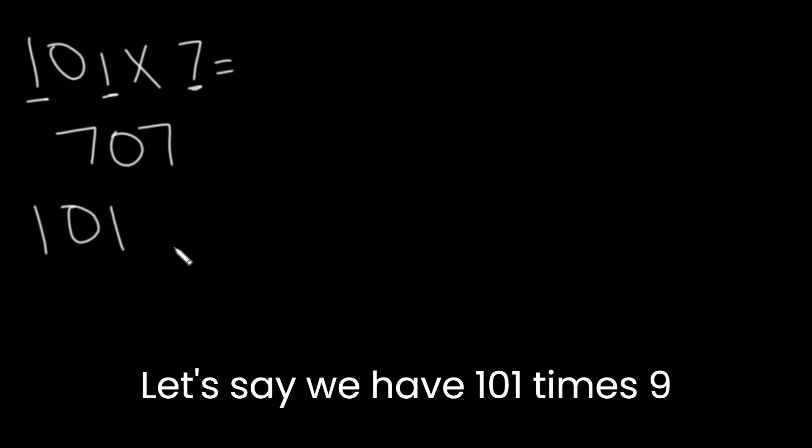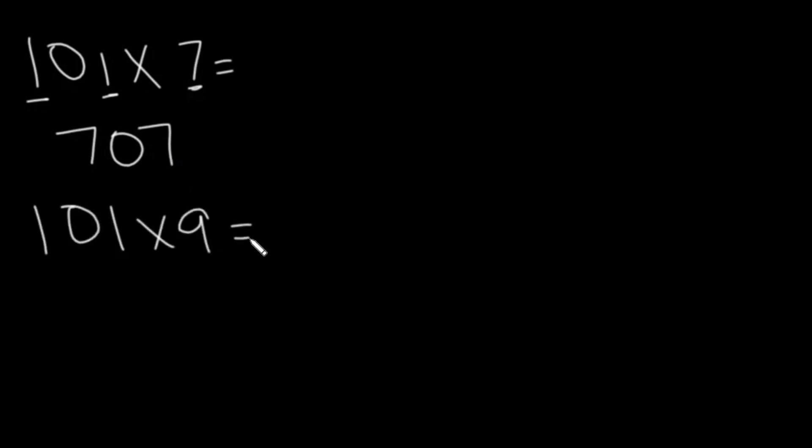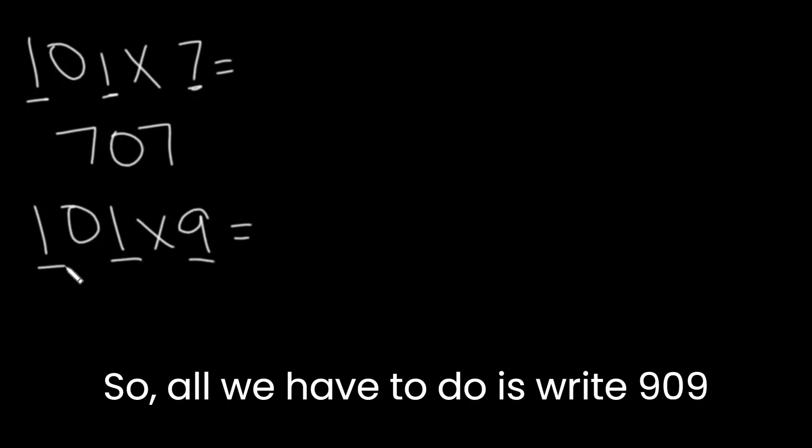Let's say we have 101 times 9. Again, we will write the 9 in the place of the ones. So all we have to do is write 909.